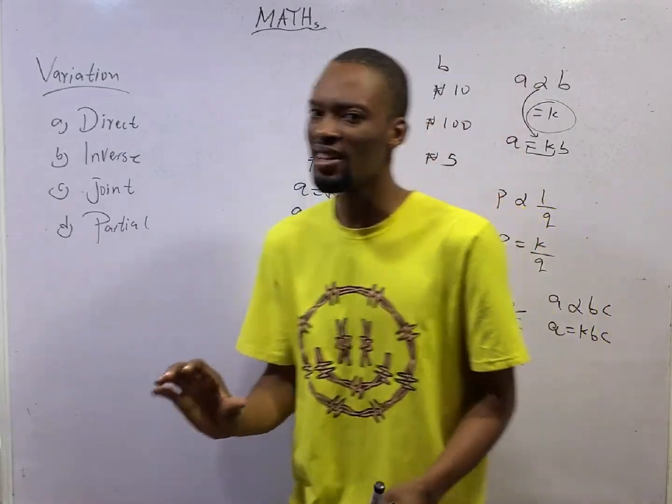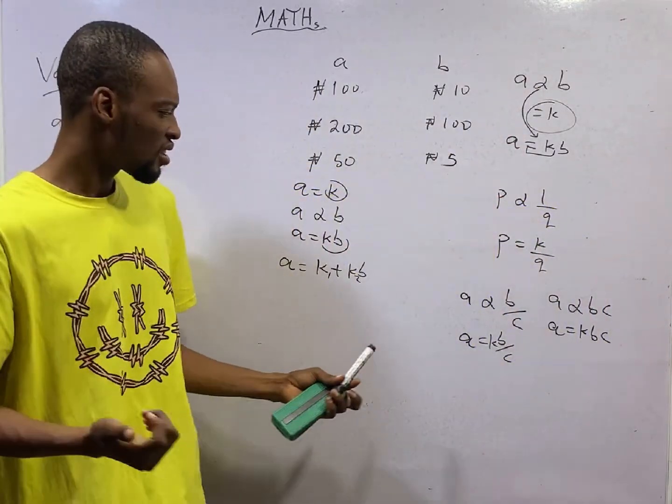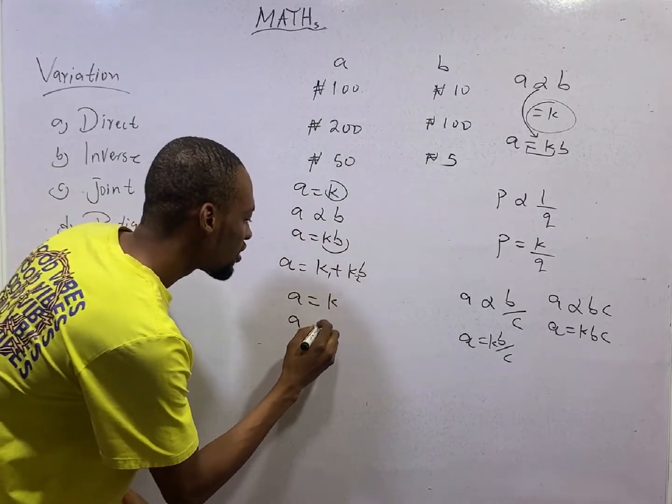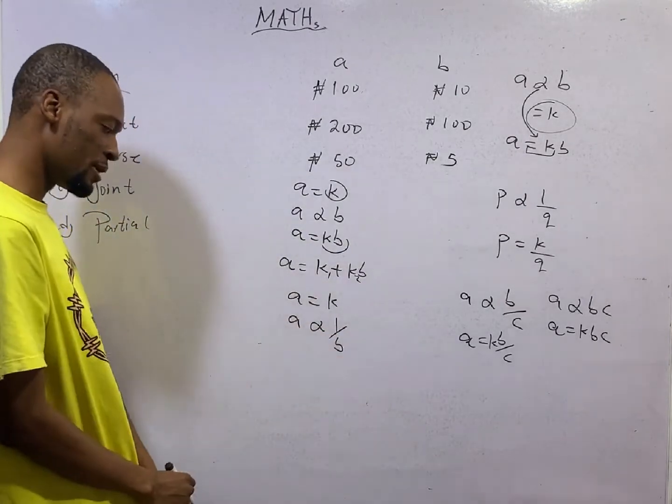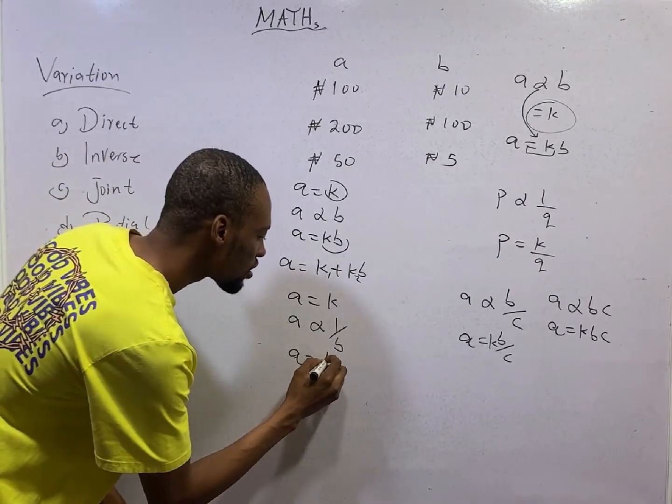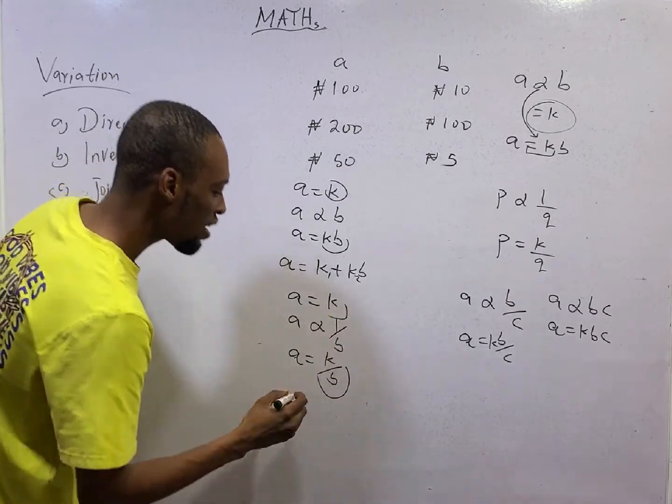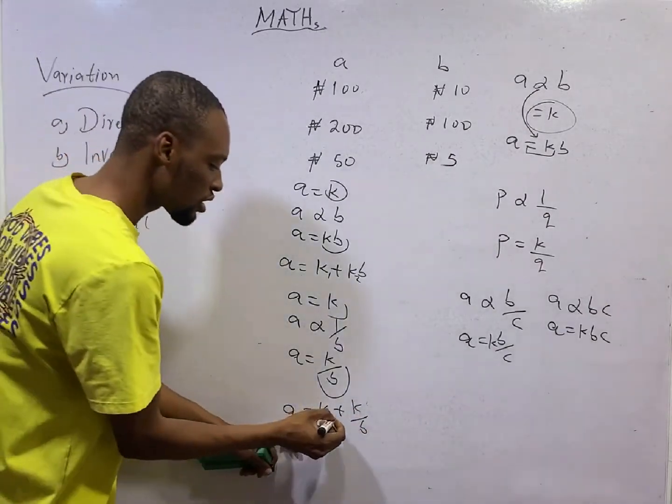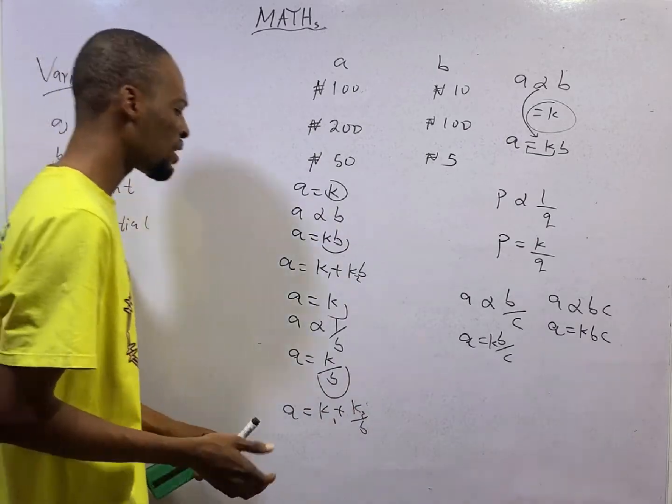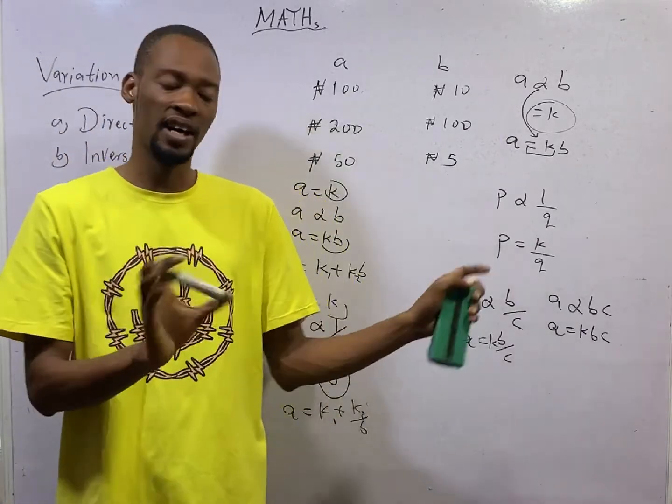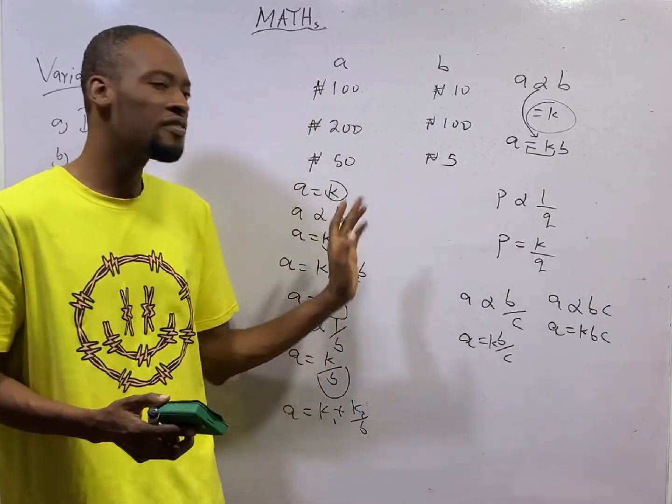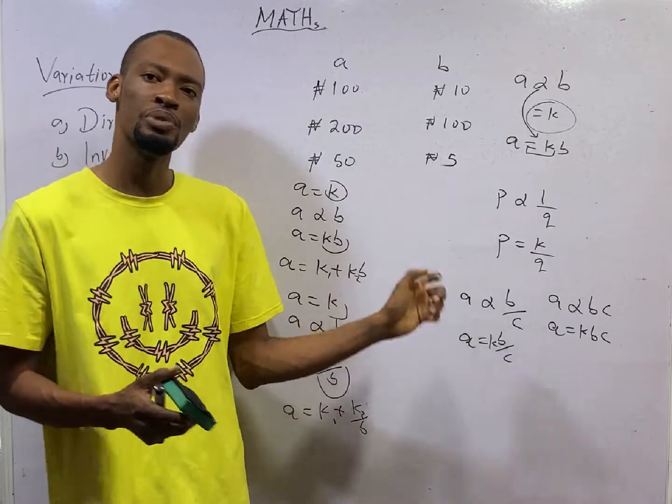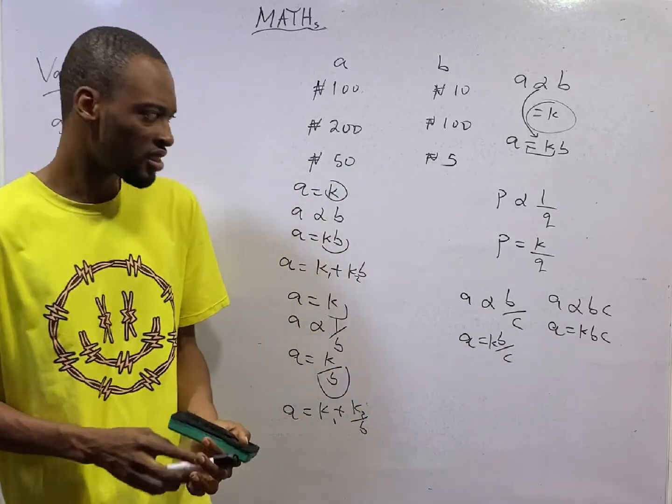However, if we are told that A is partially constant and varies inversely as B, it means A equals K and A varies inversely as B, 1 over B. This will simply be A equals K over B. Combining here and here, we have A equals K plus K over B, which is A equals K1 plus K2 over B. If we say A is partly constant and partly varies directly as B and C, that is K and K, B, C. Know how to combine them however they come.